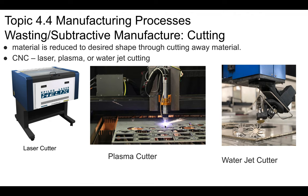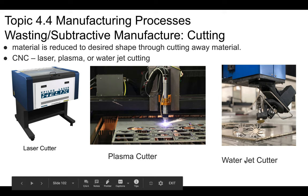Then there's water jet cutting — a really cool machine with a very high-pressure stream of water screaming out of a nozzle, capable of cutting through metals, wood, plastic, and more. The water contains abrasive particles, similar to sand, that help with cutting. You wouldn't want to run your hand through it — it would cut your hand off. Pretty cool though.